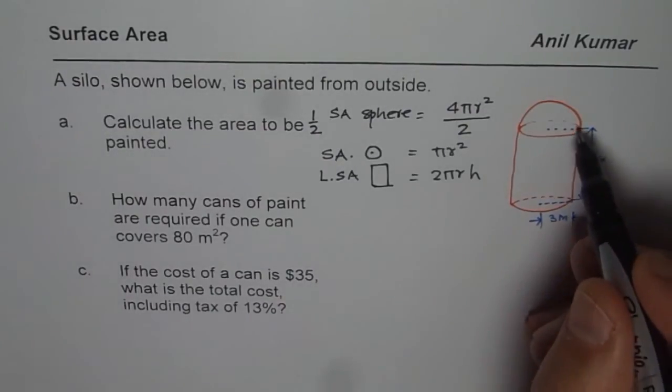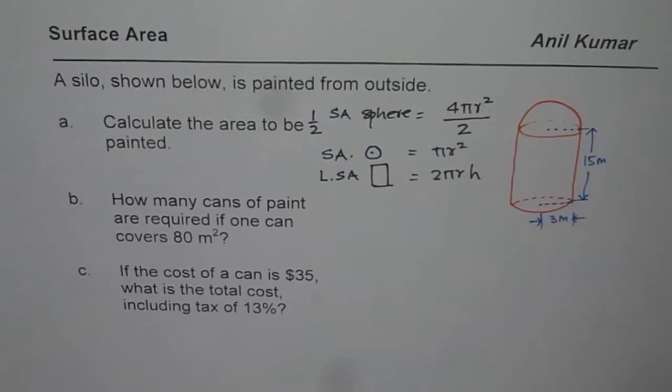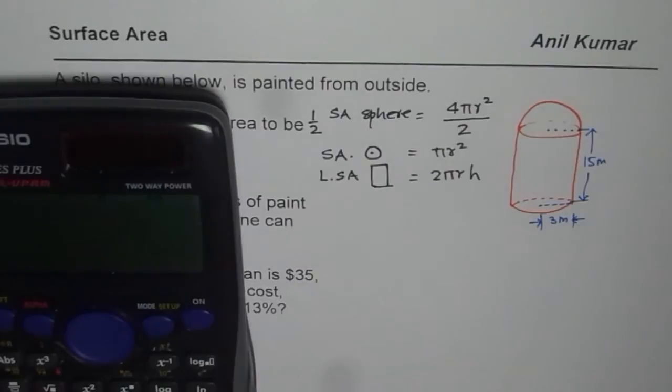We will just use the calculator and plug in the values. First one is 4 times π times r², where r is 3, so we say times 3².